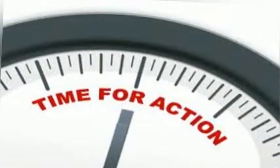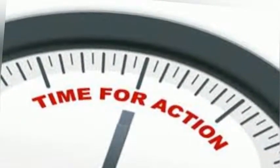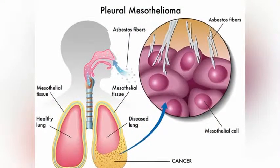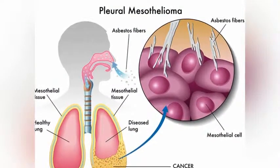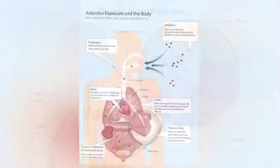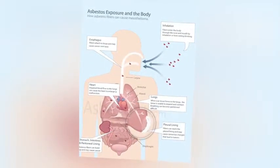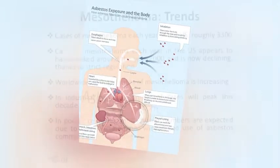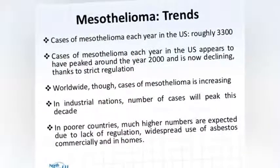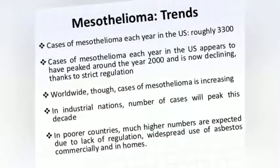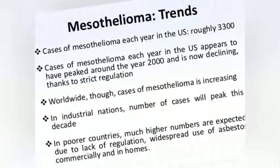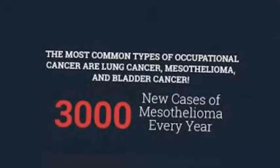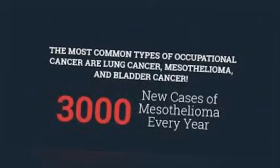Exposure to asbestos fibers has been recognized as an occupational health hazard since the early 20th century. Numerous epidemiological studies have associated occupational exposure to asbestos with the development of pleural plaques, diffuse pleural thickening, asbestosis, carcinoma of the lung and larynx, gastrointestinal tumors, and diffuse malignant mesothelioma of the pleura and peritoneum.